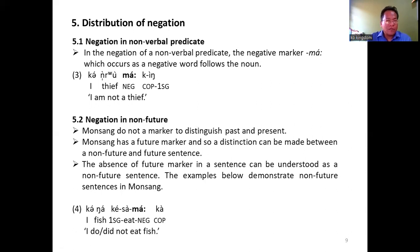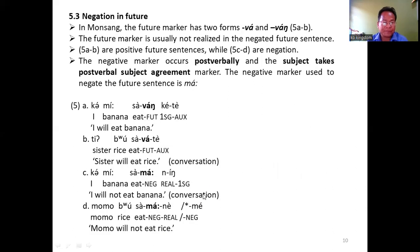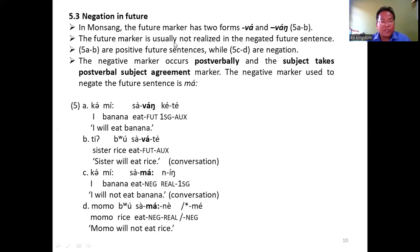The absence of the future marker is understood as a non-future sentence in Monsang. Example 4 is an instance of a non-future sentence. Negation in future: in Monsang, the future markers are va and wong. Marker wong occurs with subject agreement and va occurs in the absence of subject agreement. The future markers are not realized in the negative future sentence, as we see in examples C and D. There is no future marker when future sentences are negative.